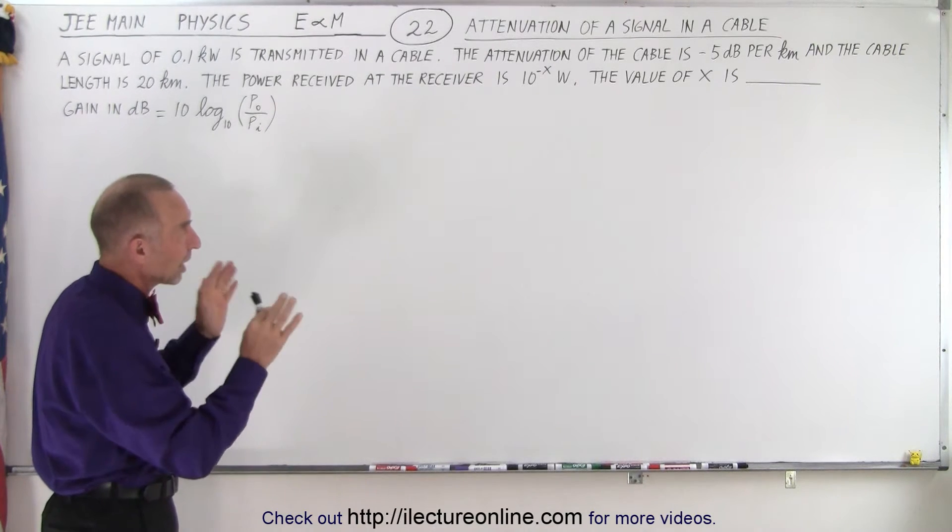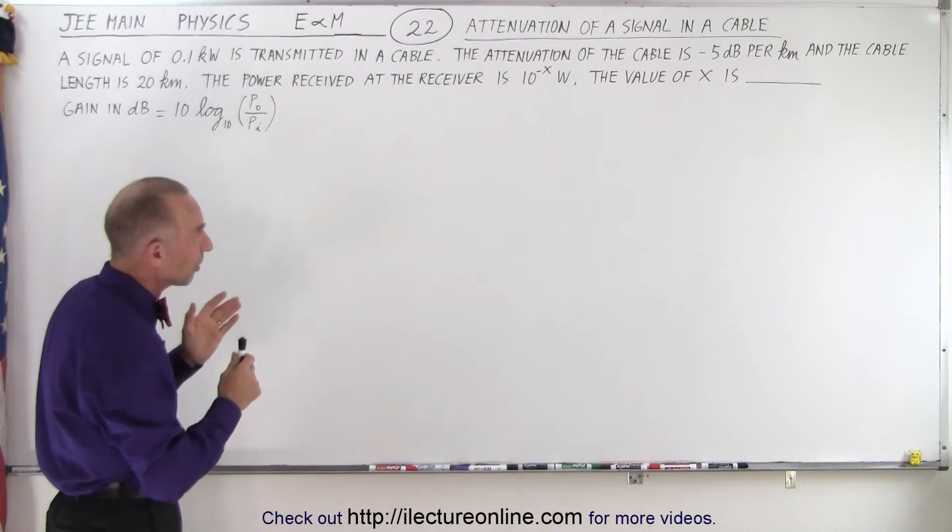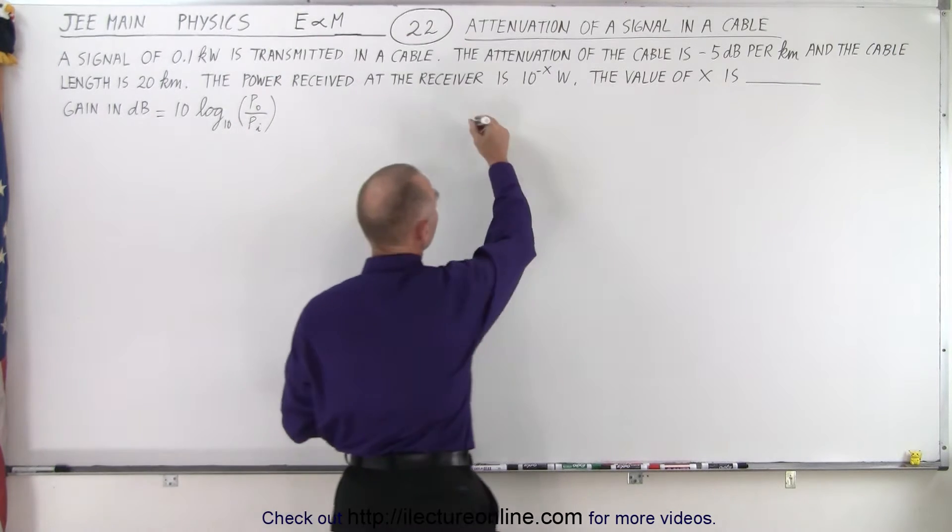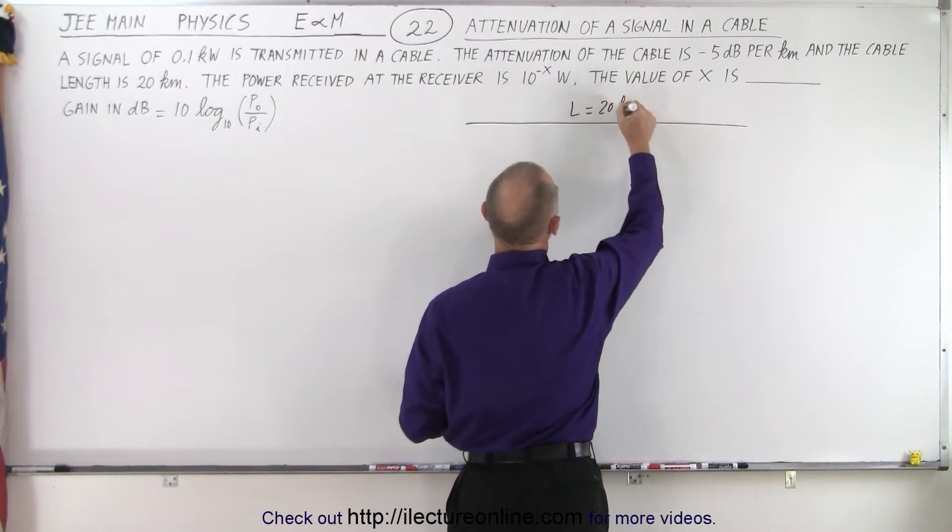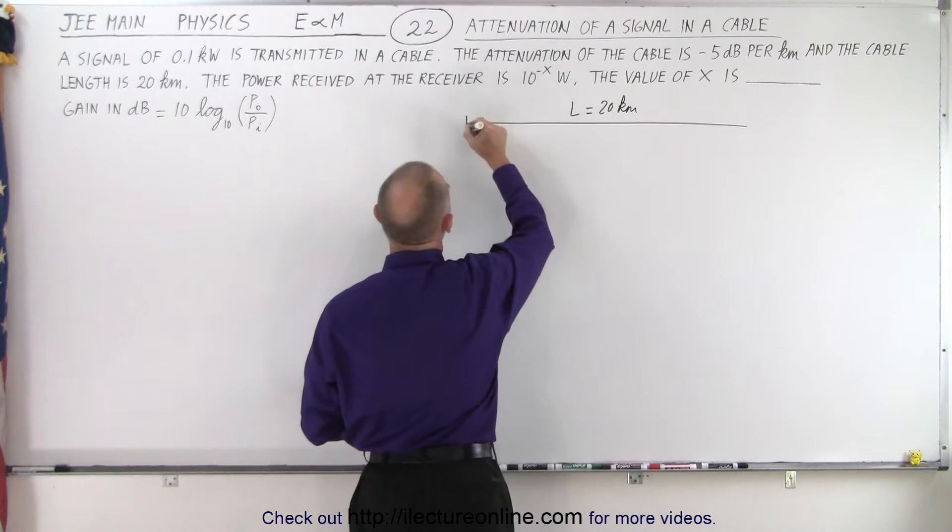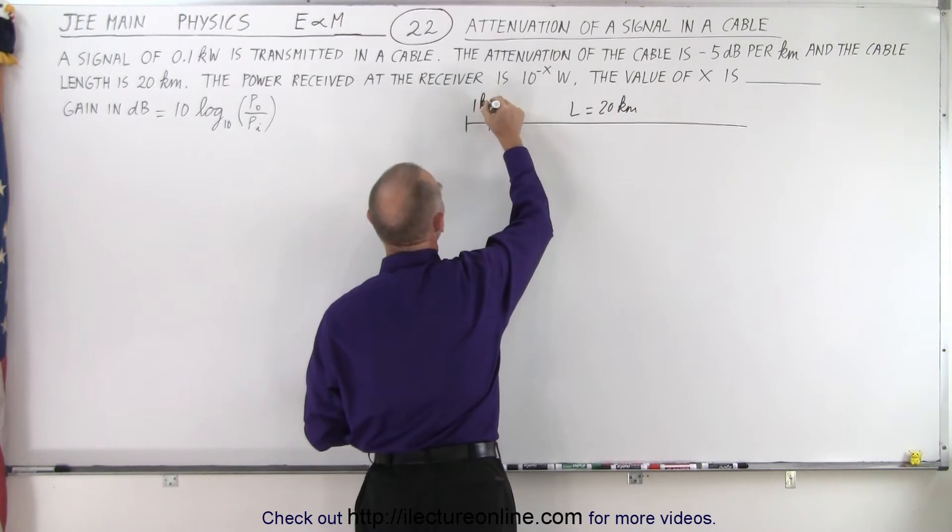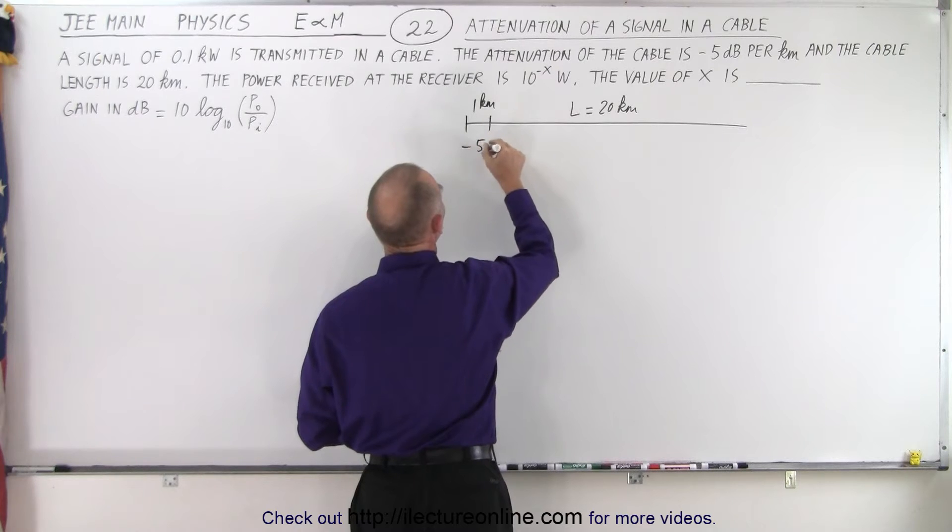First, let's understand the problem itself. We have a cable. The cable has a length equal to 20 kilometers and for every one kilometer we have an attenuation of -5 dB.